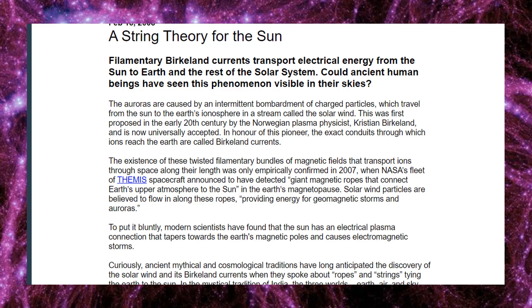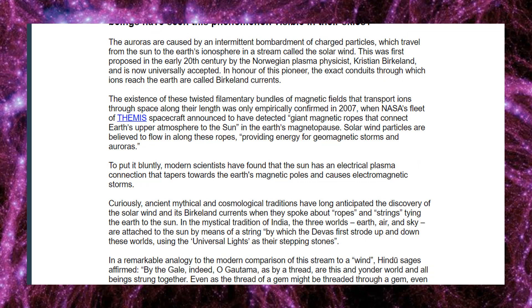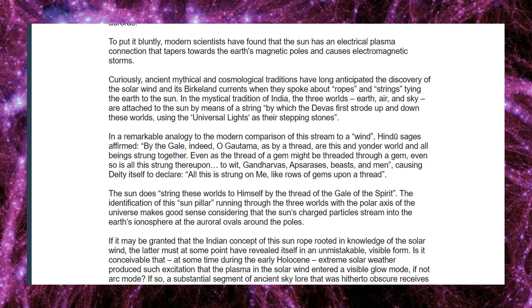The existence of these twisted filamentary bundles of magnetic fields that transport ions through space along their length was only empirically confirmed in 2007, when NASA's fleet of Themis spacecraft announced they had detected giant magnetic ropes that connect Earth's upper atmosphere to the Sun at the Earth's magnetopause. Solar wind particles are believed to flow along these ropes, providing energy for geomagnetic storms and auroras. To put it bluntly, modern scientists have found that the Sun has an electric plasma connection that tapers towards the Earth's magnetic poles and causes electromagnetic storms.